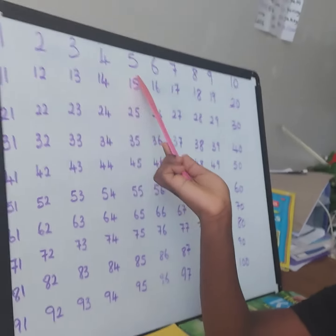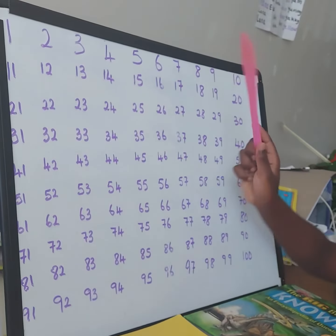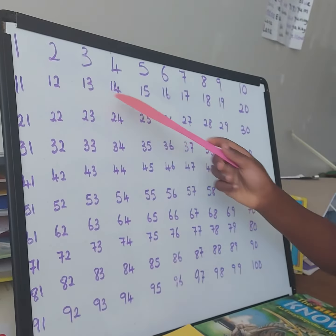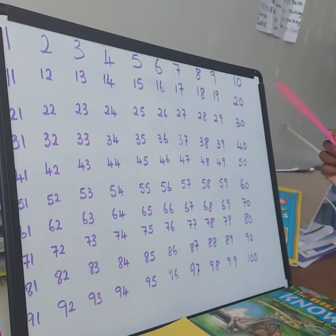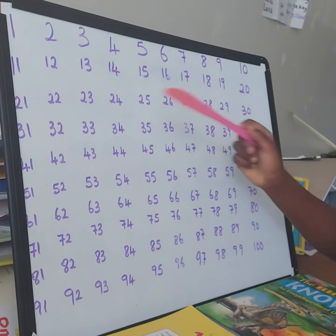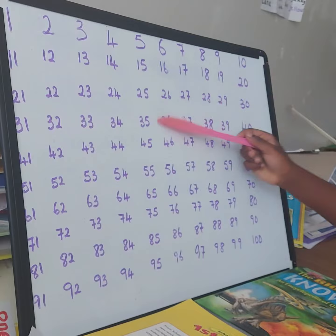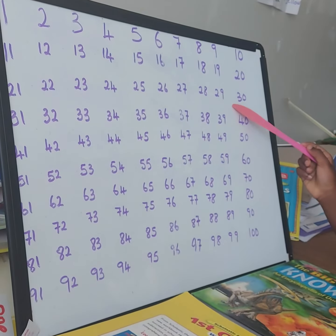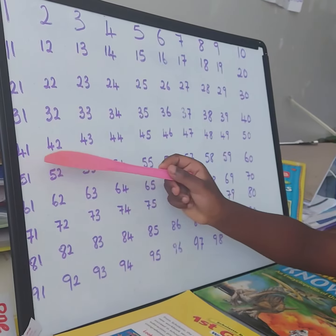2, 3, 4, 5, 6, 7, 8, 9, 10, 11, 12, 13, 14, 15, 16, 17, 18, 19, 20, 21, 22, 23, 24, 25, 26, 27, 28, 29, 30, 31.